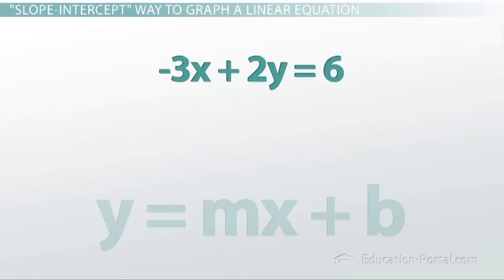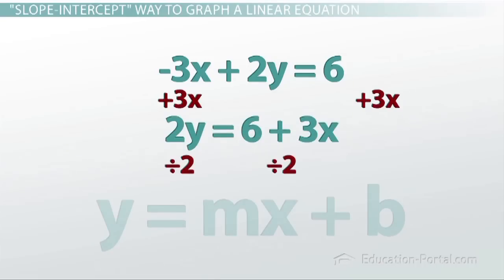it requires us to first put it in slope-intercept form by using inverse operations to get the y by itself. Which means we first have to undo the negative 3x with a positive 3x to both sides, then undo a times by 2 with a divide by 2 to both sides.